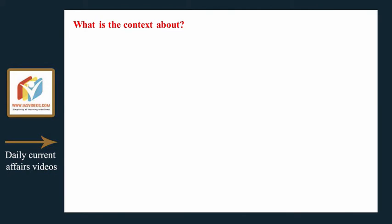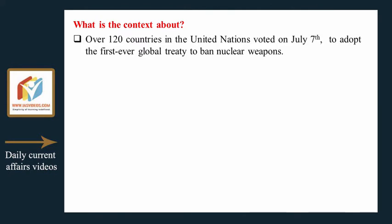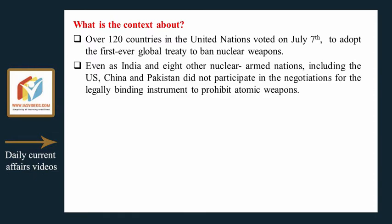What is the context? Over 120 countries in the United Nations voted on July 7 to adopt the first-ever global treaty to ban nuclear weapons, even as India and eight other nuclear-armed nations, including the US, China, and Pakistan, did not participate in the negotiations for this legally binding instrument to prohibit atomic weapons.